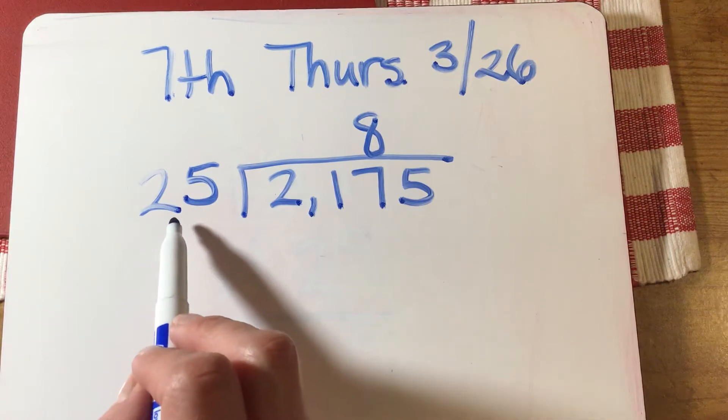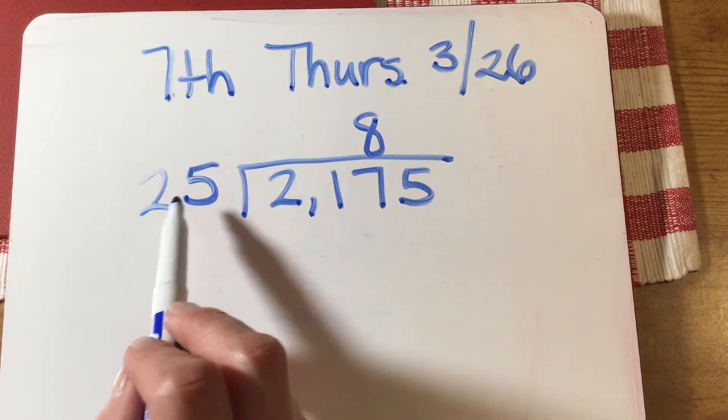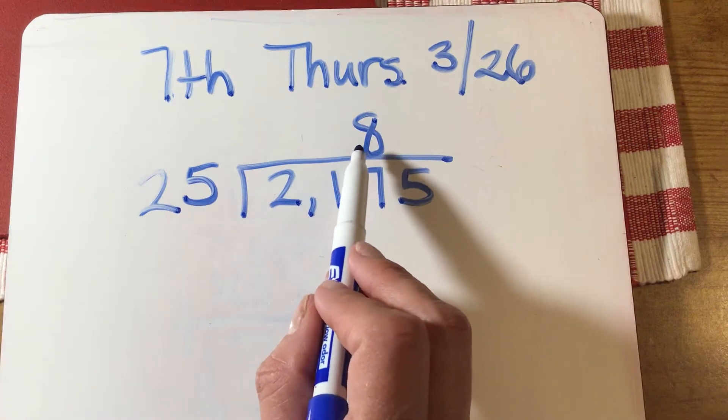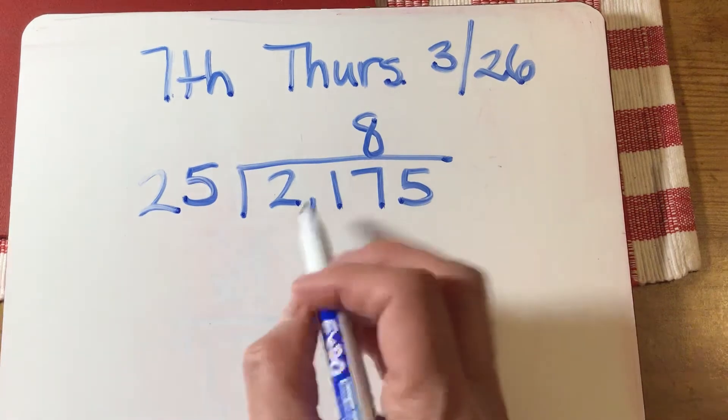So this can go evenly into hundreds. So think of, oh okay, if I have eight quarters, that would make two dollars or 200.